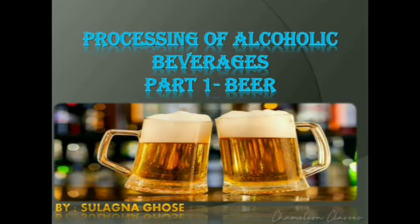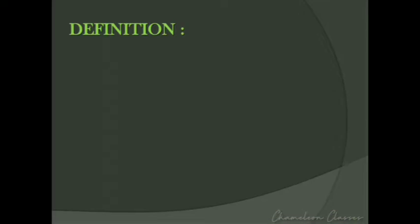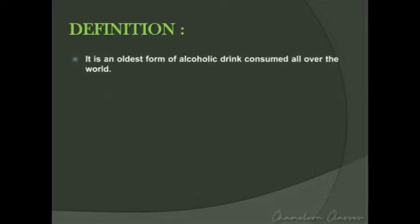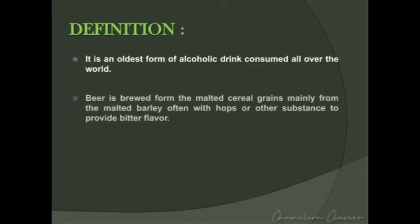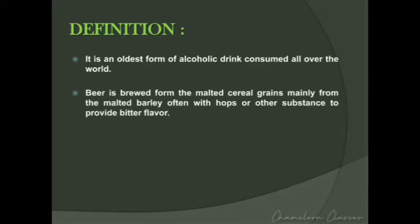Hello everyone, welcome to Chameleon Classes. Today's topic is processing of alcoholic beverages, that is beer. In this lecture, the brewing of beer is explained by a step-by-step process. Beer is an oldest form of alcoholic drink consumed all over the world, mainly brewed from malted cereal grains — primarily malted barley — often with hops or other substances to produce the bitter flavor.